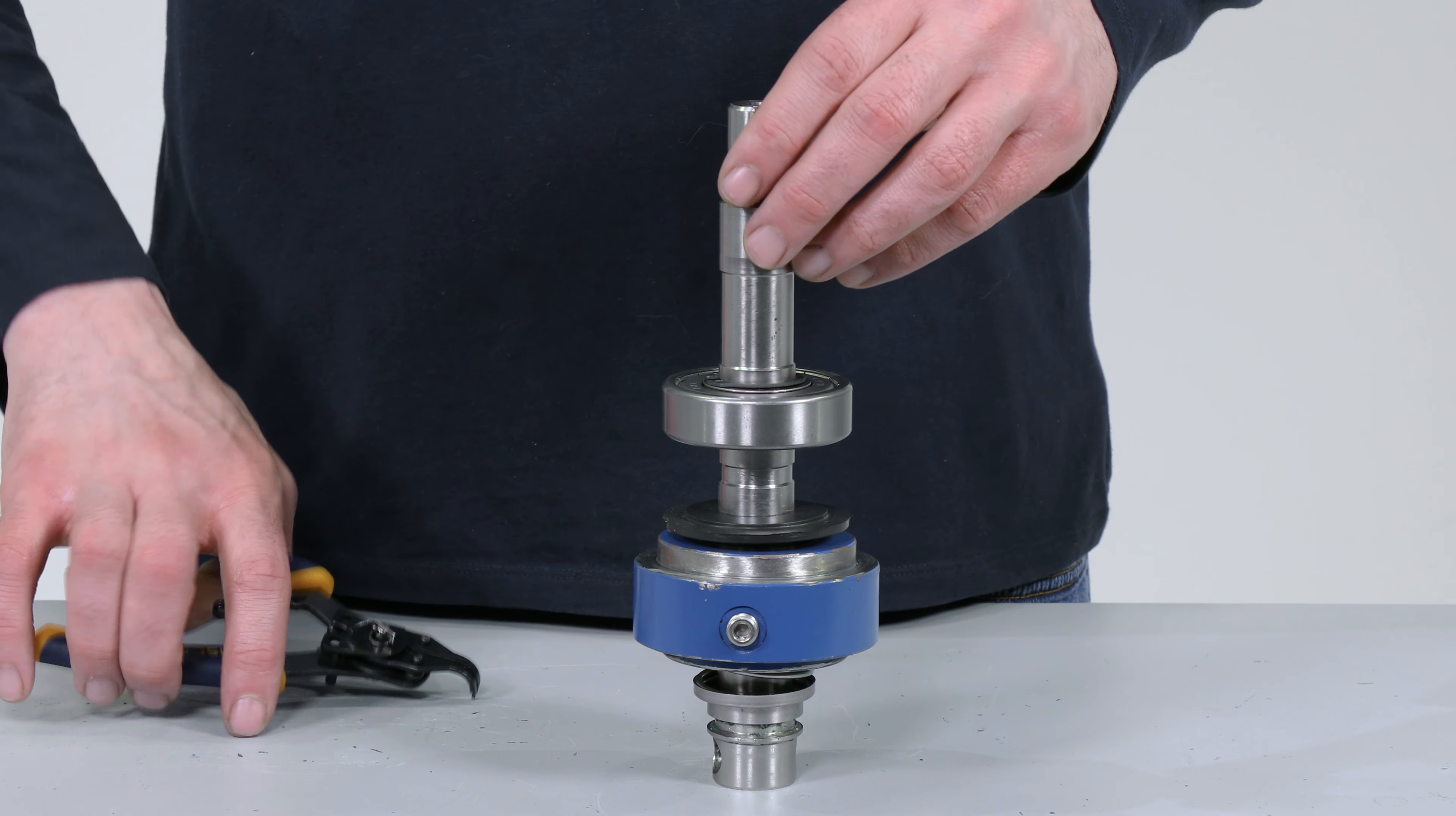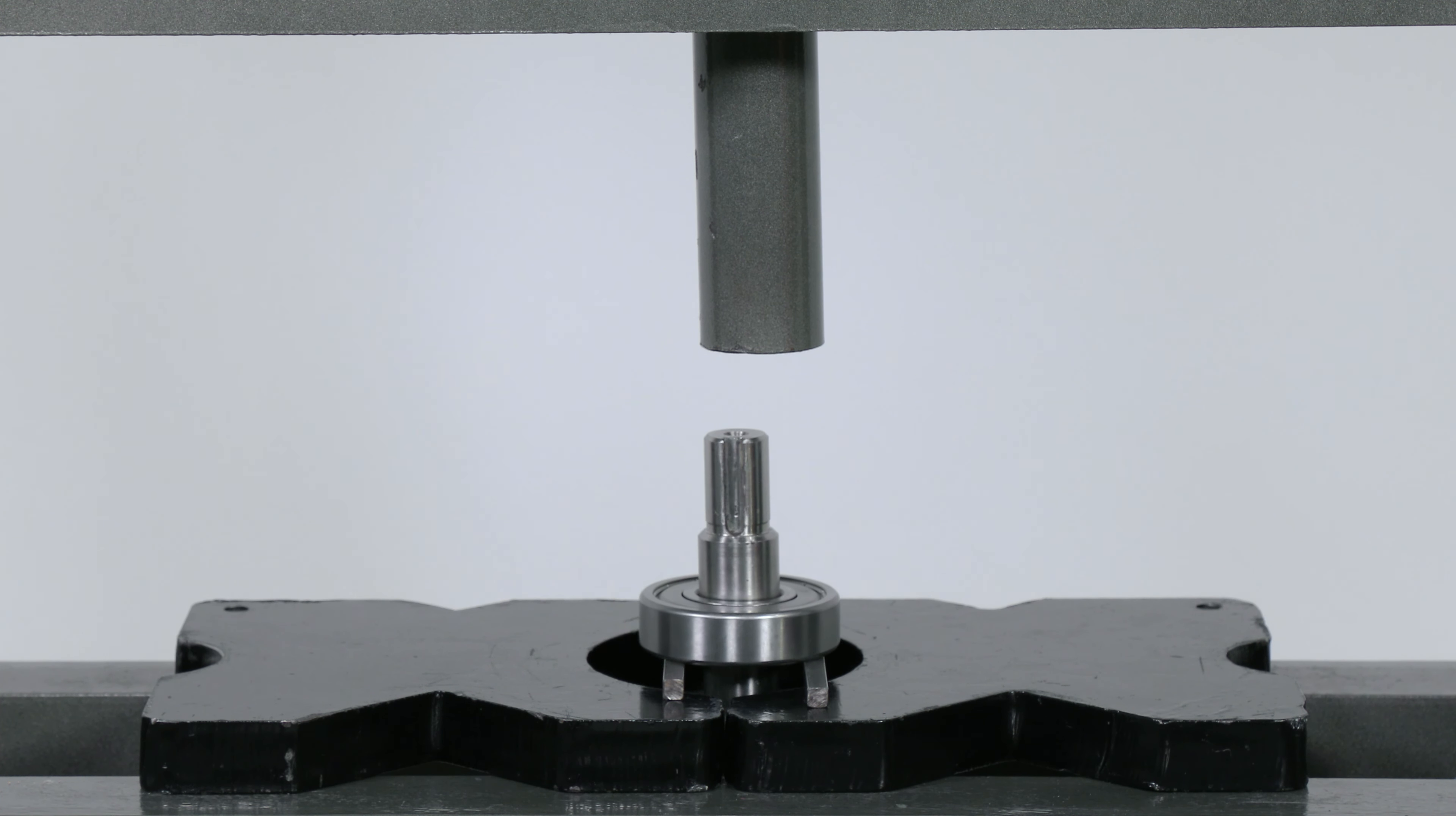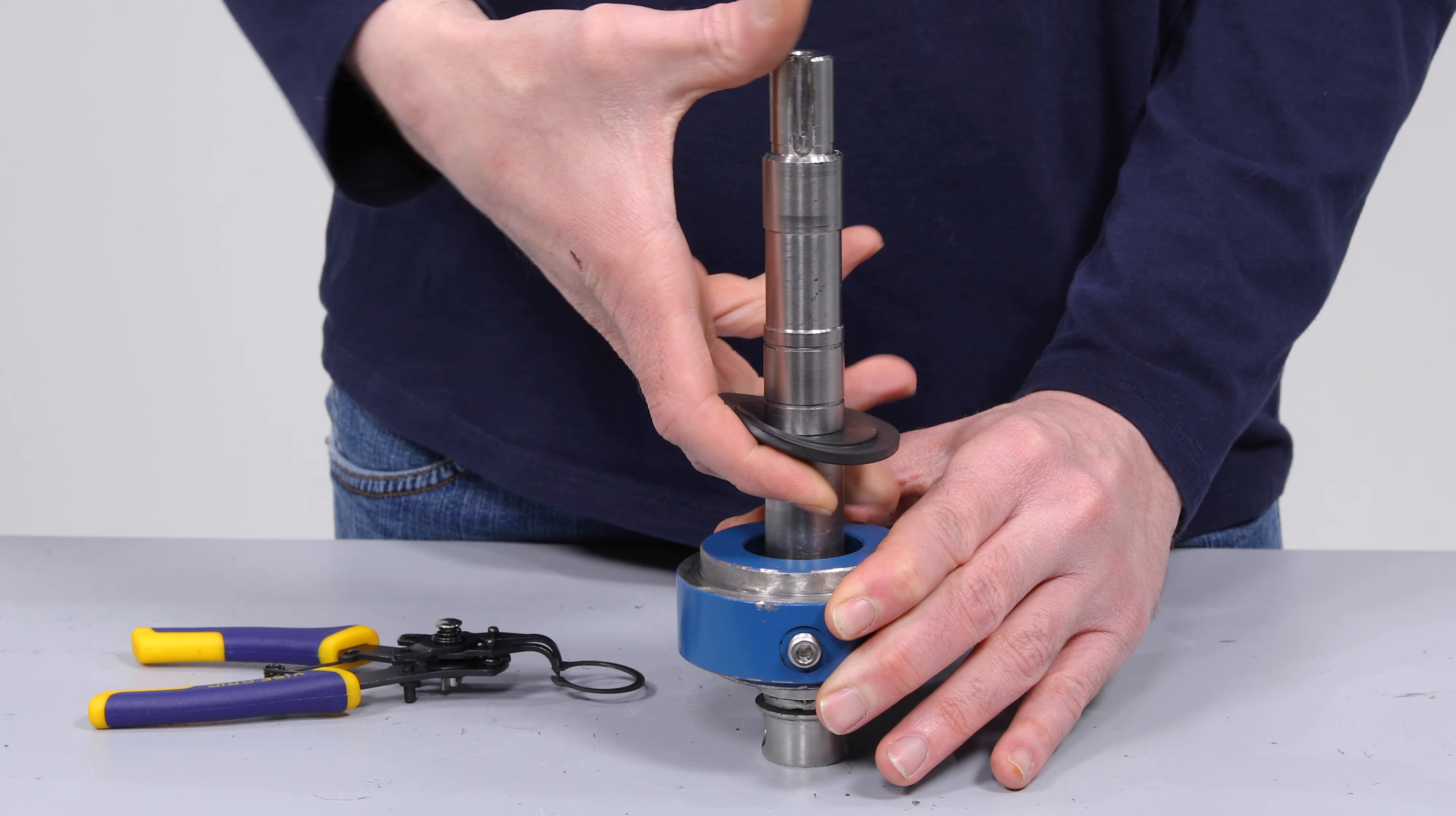Put the drive shaft on the workbench and remove the first snap ring. Place the drive shaft in a press and remove the second bearing. Place the drive shaft back on the workbench and remove the last snap ring with small snap ring pliers. Slide the flinger ring off of the drive shaft.